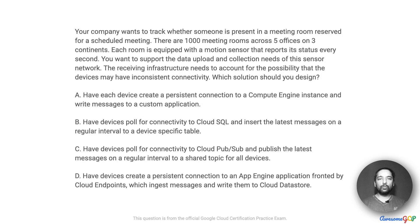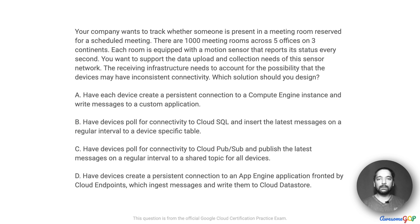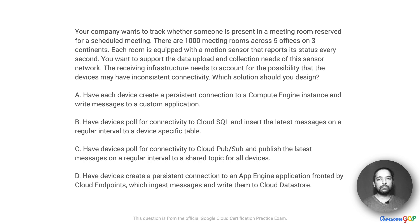In this scenario, your company wants to track whether someone is present in a meeting room reserved for a scheduled meeting. There are a thousand meeting rooms across five offices on three continents. Each room is equipped with a motion sensor that reports its status every second. You want to support the data upload and collection needs of this sensor network. The receiving infrastructure needs to account for the possibility that the devices may have inconsistent connectivity. Which solution should you design?